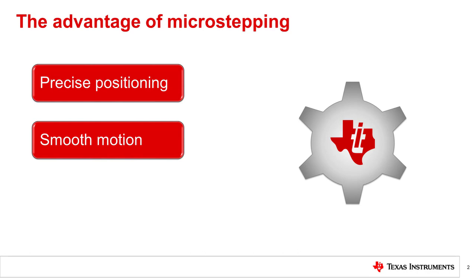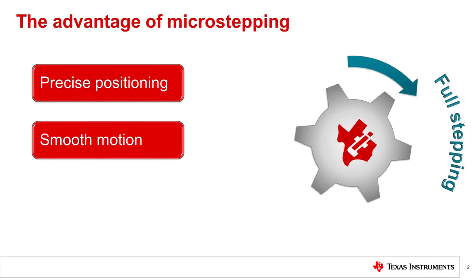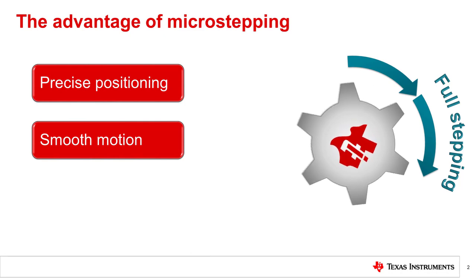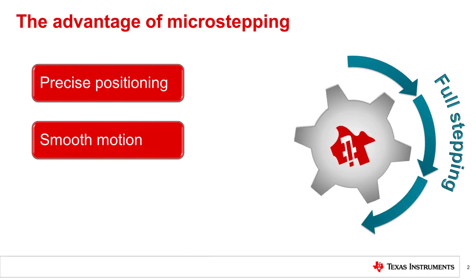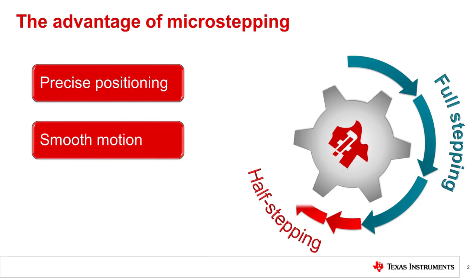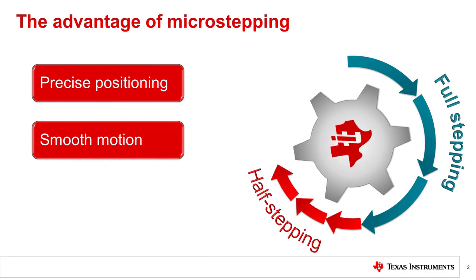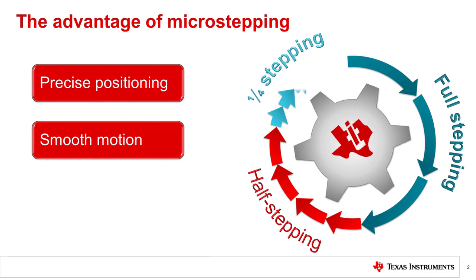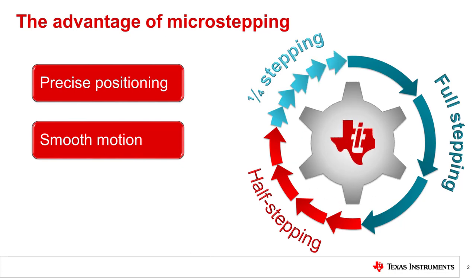Microstepping is a stepper driving technique that can help achieve precise positioning and smoother motion from stepper motors. The animation on this slide shows an example of how microstepping might impact the motion of a gear. Typical step sizes of most stepper motors could be 0.9 degrees per step to 32 degrees per step, so please note that the motion shown in this animation is exaggerated.